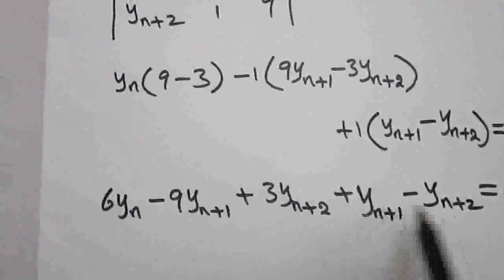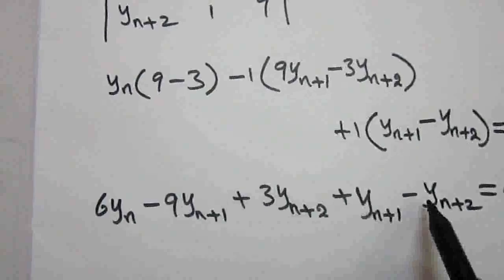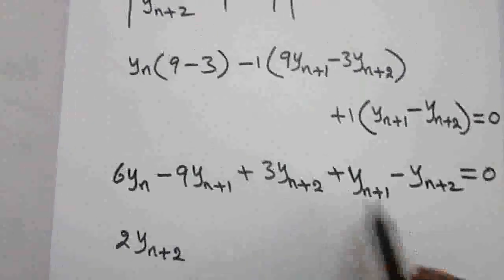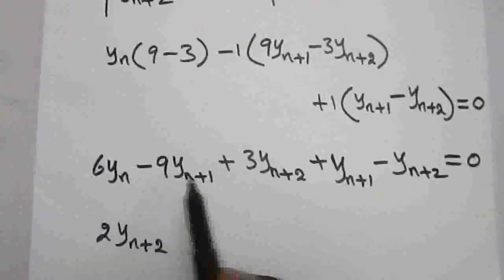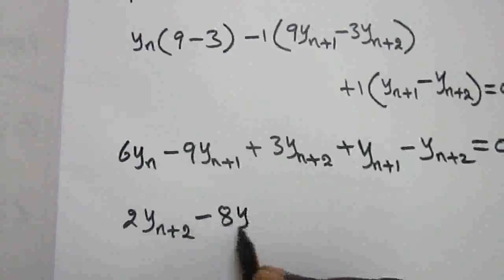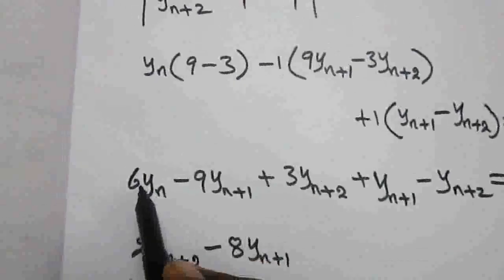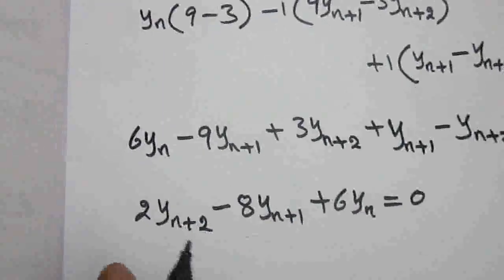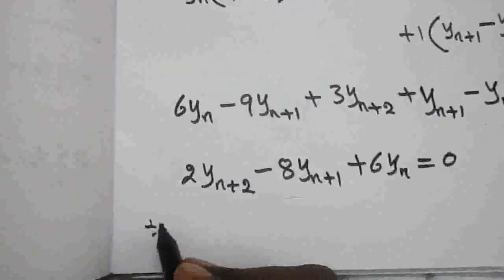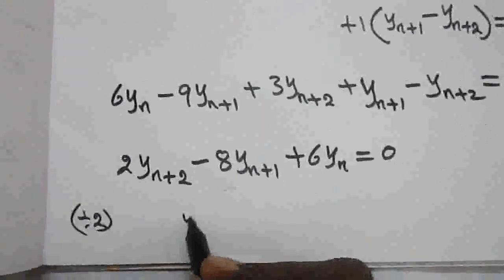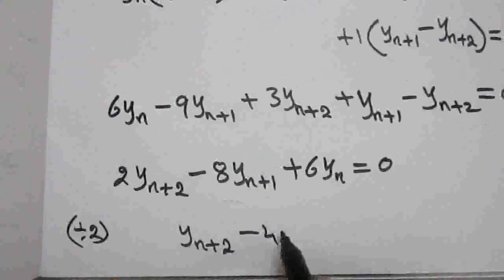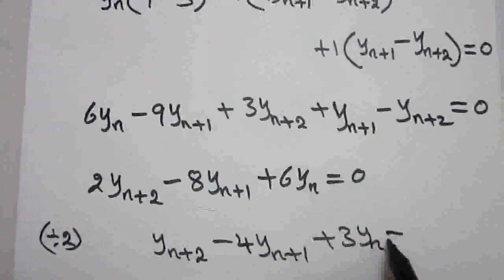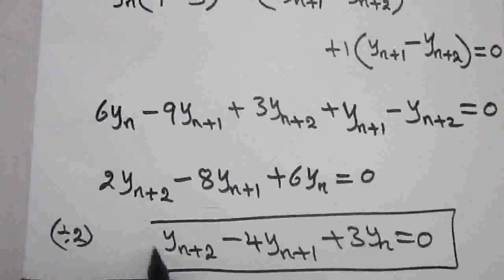Rearranging: the y(n+2) terms give 3 minus 1 equals 2 times y(n+2); the y(n+1) terms give minus 9 plus 1 equals minus 8 times y(n+1); and the remaining term is plus 6yn, equal to 0. Dividing all terms by 2 we get y(n+2) minus 4 y(n+1) plus 3yn equal to 0. This is the required difference equation.